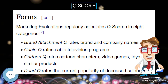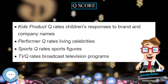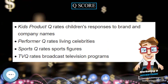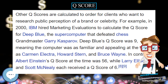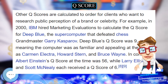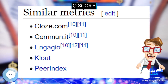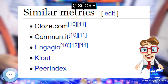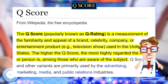Deep Blue's Q-score was 9, meaning the computer was as familiar and appealing at the time as Carmen Electra, Howard Stern, and Bruce Wayne. In contrast, Albert Einstein's Q-score at the time was 56, while Larry Ellison and Scott McNeely each received a Q-score of 6.